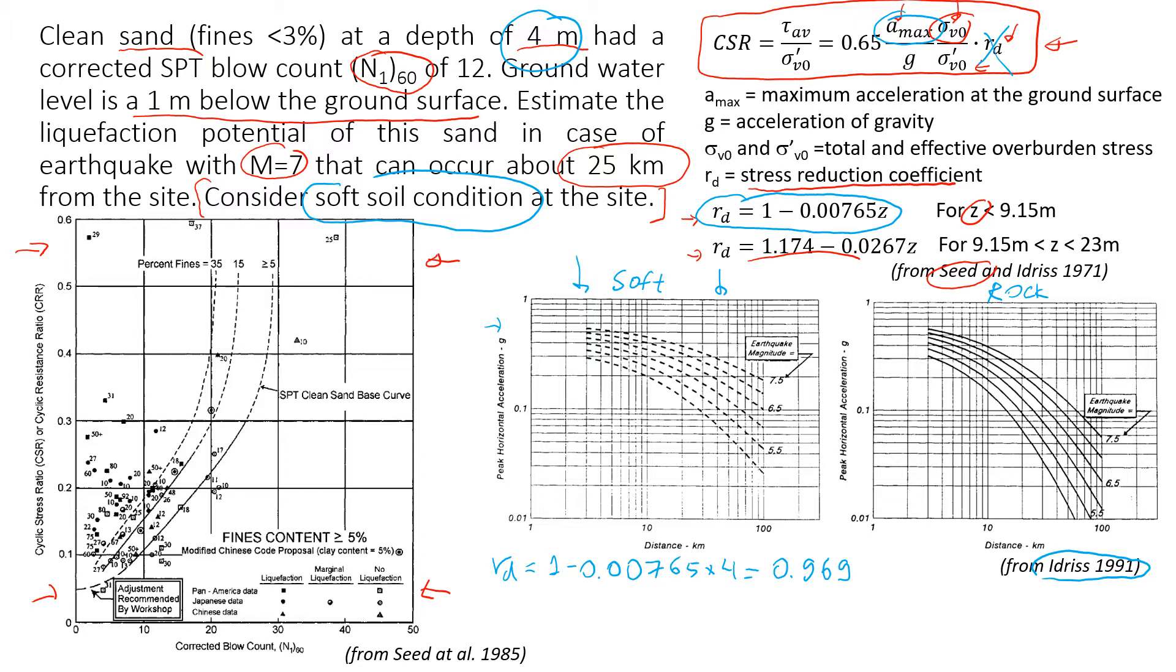So in this case we're going to look at the distance to the epicenter, and in our case is 25 kilometers here, and magnitude is seven, so it will be about here. So you will see that this point, that will be about 0.3g. So we're going to write that maximum acceleration that can be expected is 0.3g.